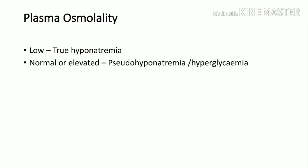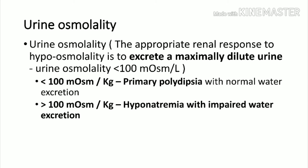Serum osmolality must be low for true hyponatremia; normal or elevated osmolality indicates pseudo-hyponatremia. Second, check urine osmolality. In response to hypoosmolality, the kidneys should excrete maximally diluted urine — urine osmolality should be less than 110 milliosmoles per liter. If urine osmolality is less than 110, consider primary polydipsia. If greater than 100, there is impaired water excretion.